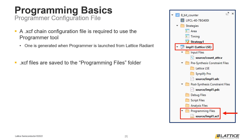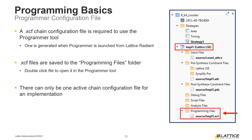A useful feature of the files in the programming files folder is that they can be used to directly launch the programmer tool. To open the programmer tool using one of these files, double-click the name of the chain configuration file you want to open. One final thing to remember about .xcf files is that there can only be one active chain configuration file for each implementation. To switch the active chain configuration file, right-click the file name and select Set as Active from the drop-down. The name of the selected .xcf file should be in bold, indicating that it is active. The active chain configuration file is the file used when the built-in programmer tool is launched.